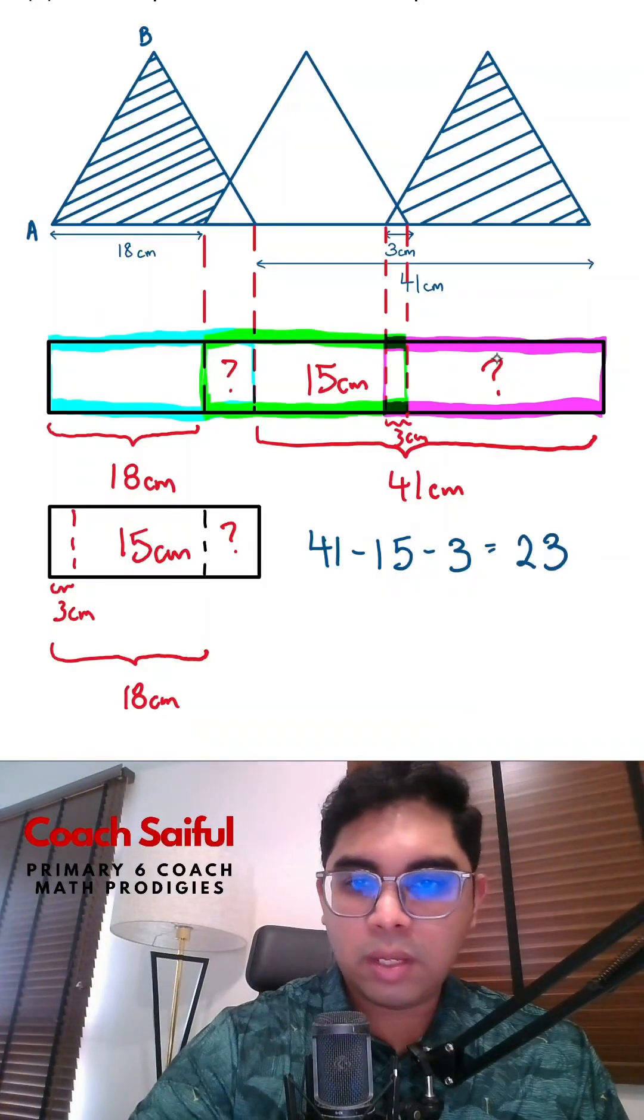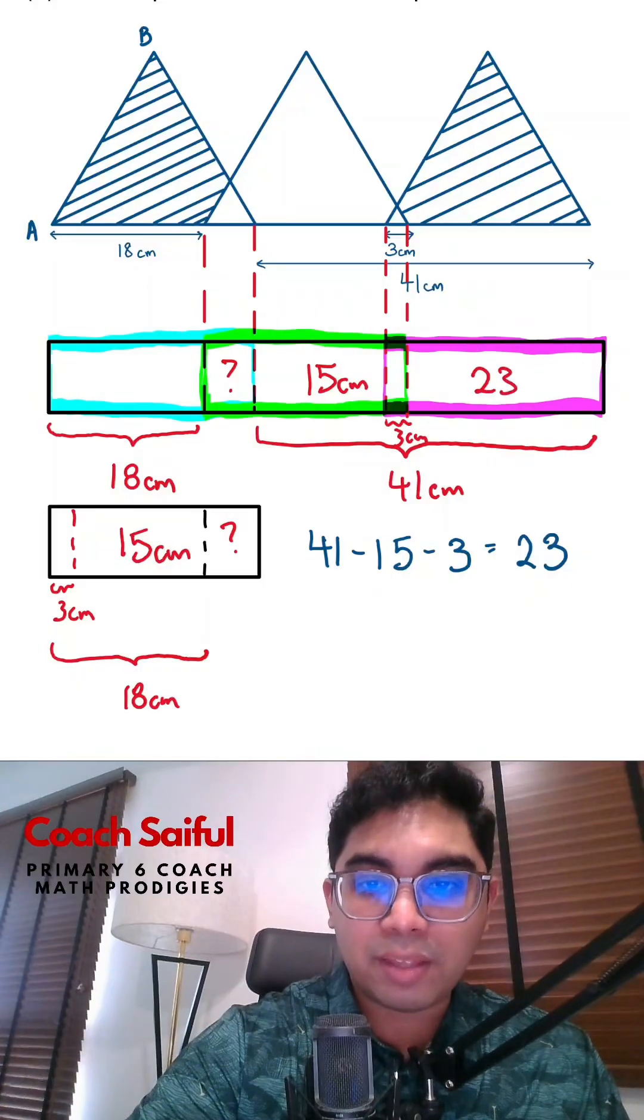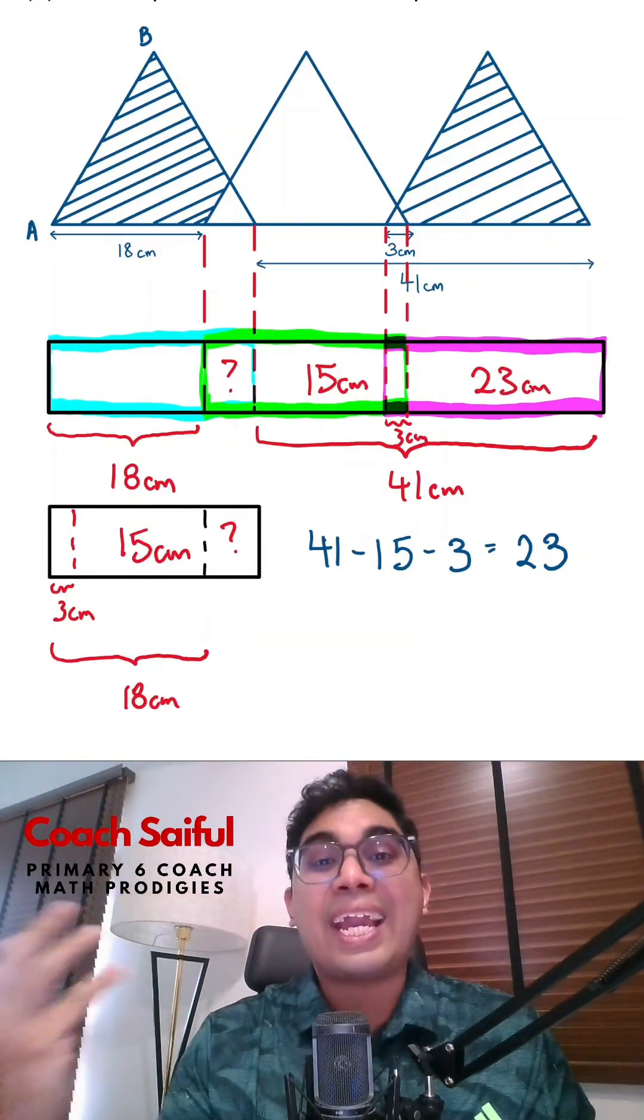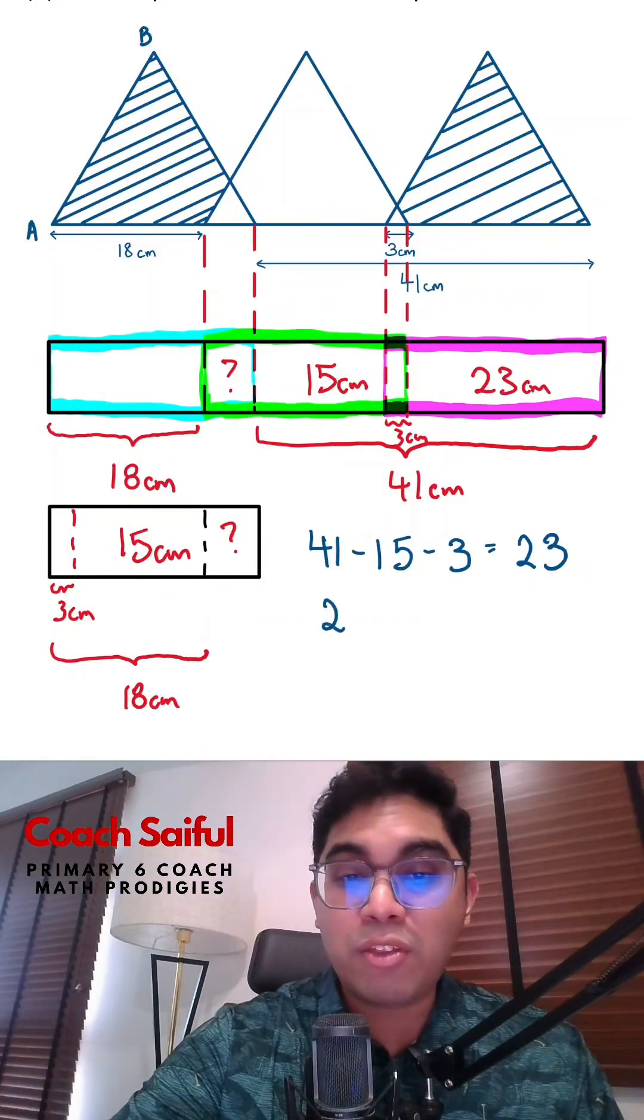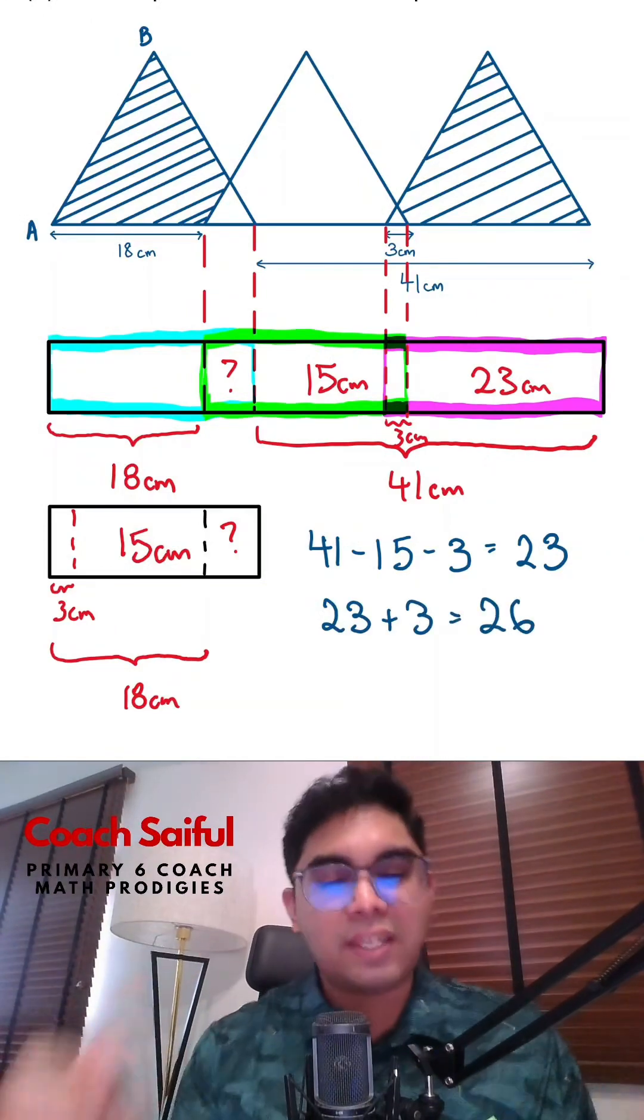23cm. Now, this tells me this segment is 23cm. And with that, I can find the length of AB, 23cm plus 3cm, giving us the answer of 26cm.